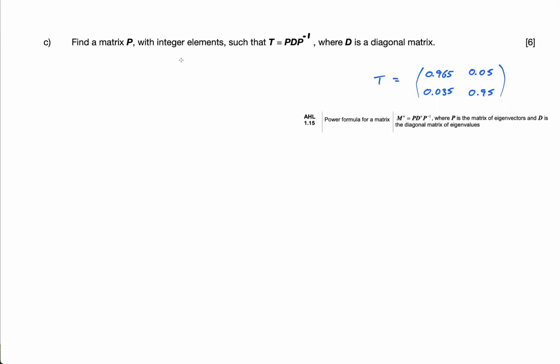Okay, part C says find a matrix P with integer elements such that T is P times D times P inverse, when D is a diagonal matrix.